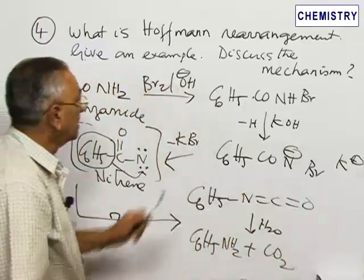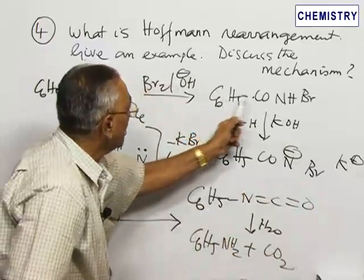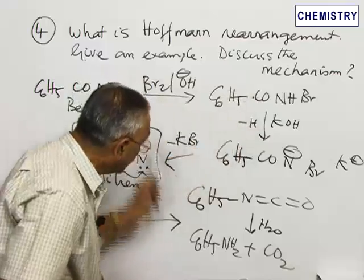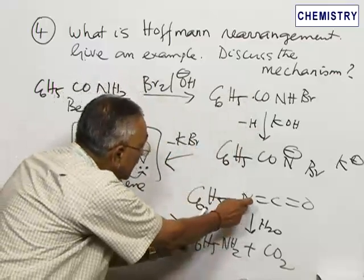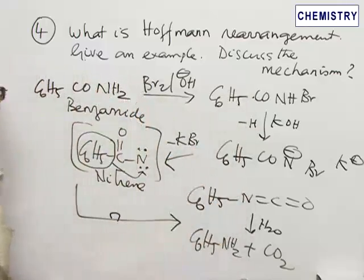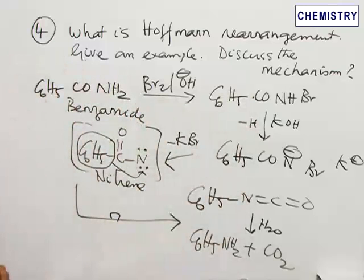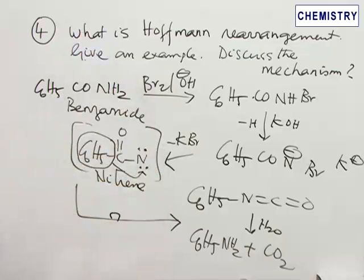The important point is that between C₆H₅ and NH₂ there was a CO group — that CO is lost — and C₆H₅ and N are directly connected in the product. This involves the rearrangement, and this is known as Hofmann rearrangement, the mechanism of which has been described.